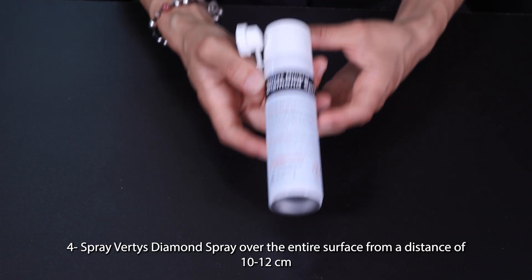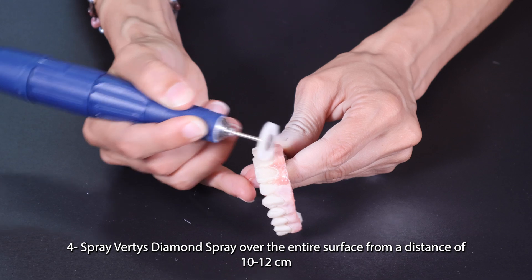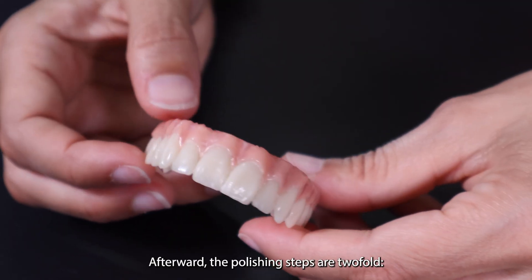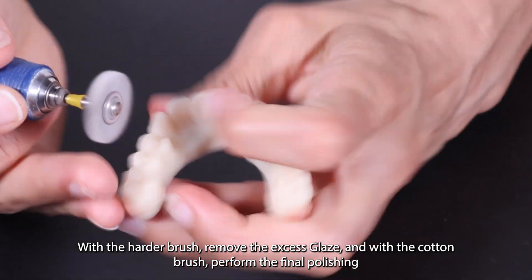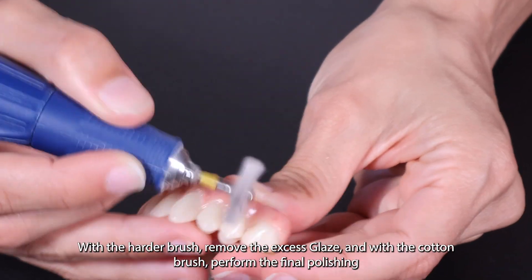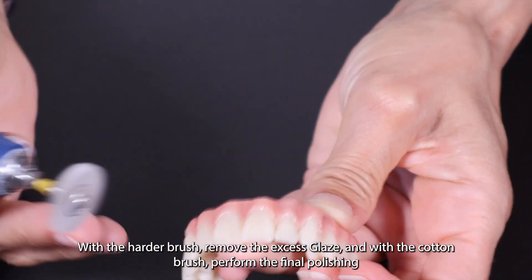Four, spray Vertis Diamond Spray over the entire surface from a distance of 10 to 12 centimeters. Afterward, the polishing steps are twofold: with a harder brush remove the excess glaze, and with the cotton brush perform the final polish.